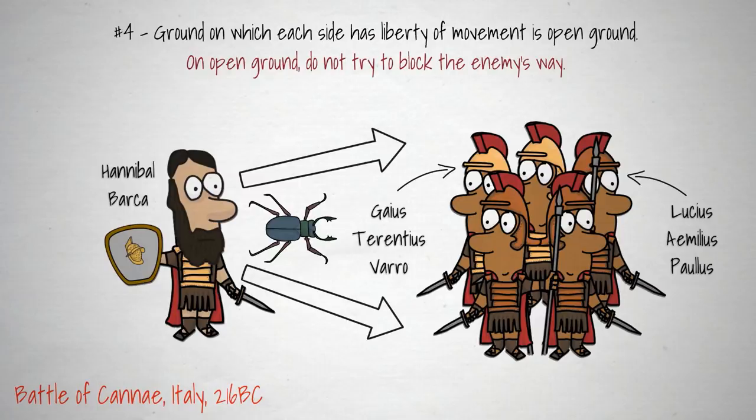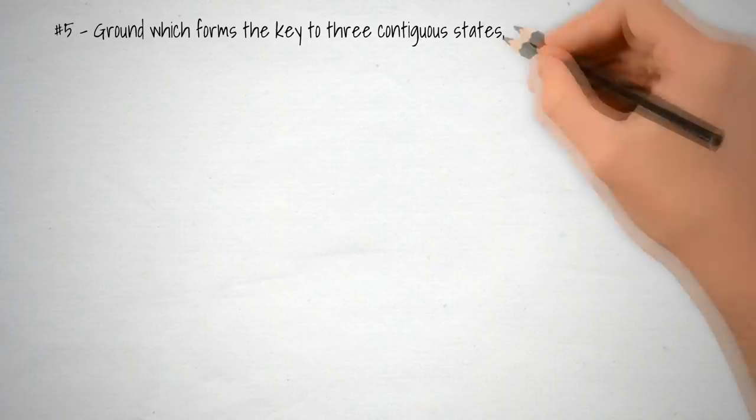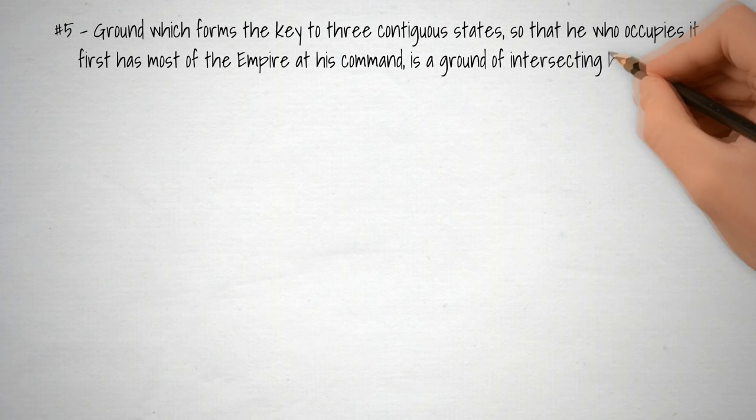Lesson number 5. Ground which forms the key to three contiguous states, so that he who occupies it first has most of the empire at his command, is a ground of intersecting highways. On the ground of intersecting highways, join hands with your allies.